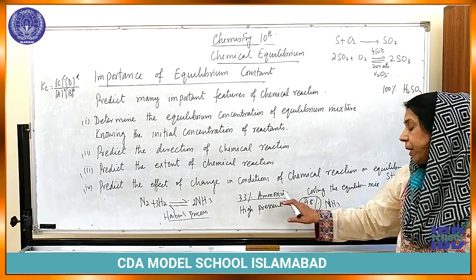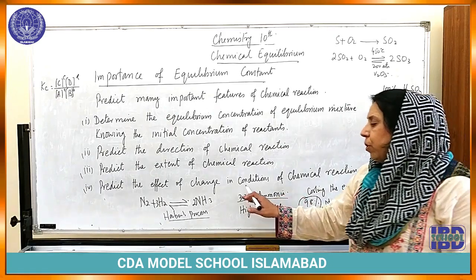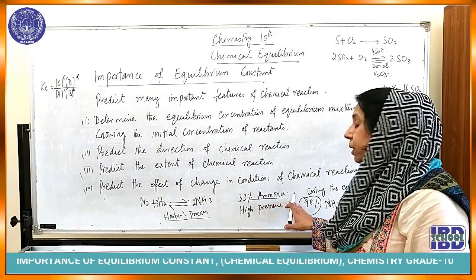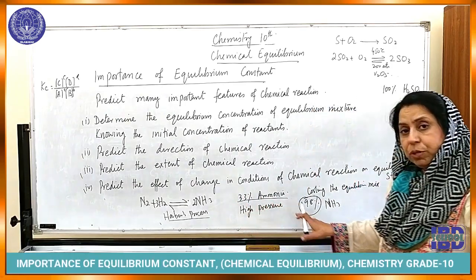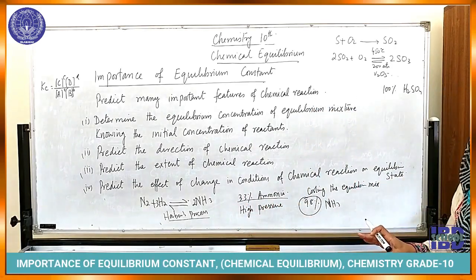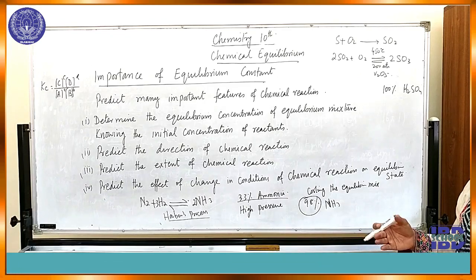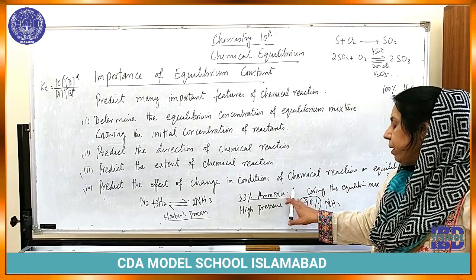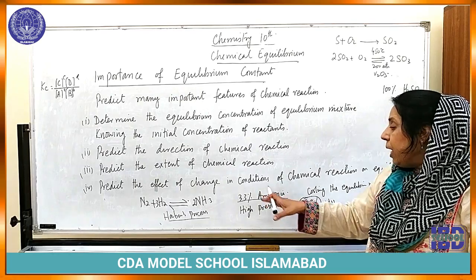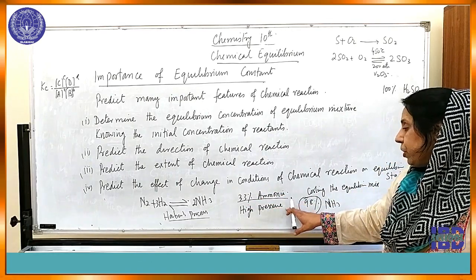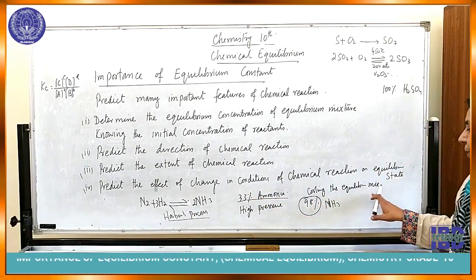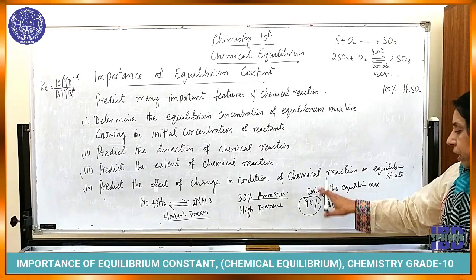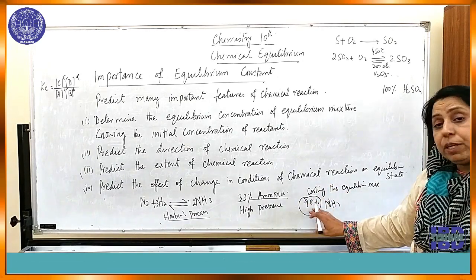How much difference does that make? Without increasing pressure, we only get 33% ammonia, which does not necessarily favor us — it is not profitable. But if we apply high pressure to the equilibrium mixture, then we can get 98% ammonia.